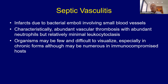Septic vasculitis is a different ballgame. It's due to infarcts from bacterial emboli or other organisms. The key here is you get more thrombosis with intact neutrophils but relatively little leukocyte eclasia, because this is not an immune complex-mediated process. There's no IgM, IgG, or C3. Instead, you're getting organisms with inflammation and then vascular thrombosis — intact inflammatory cells as opposed to breakdown products.